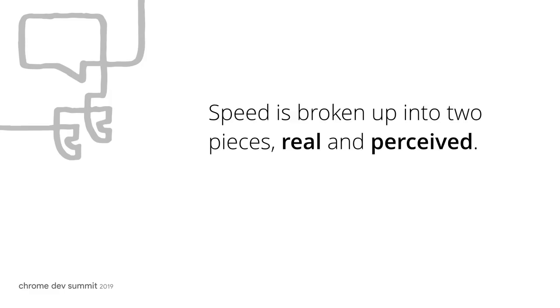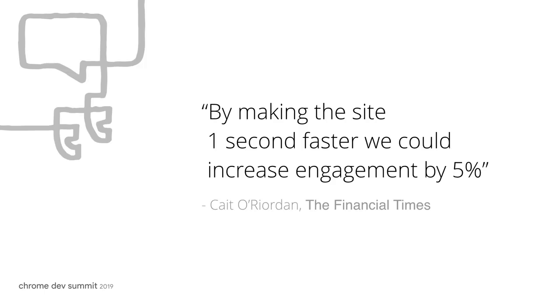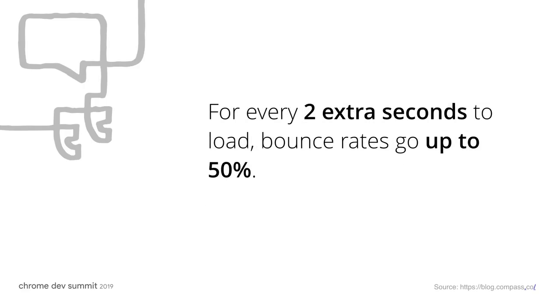Speed is broken down into two things: real and perceived. Looking at some technical speed data, we see the Financial Times, which has an interesting algorithm called the tipping point. If a user comes to the website five times a month to read five articles, they're more likely to subscribe. By making the website one second faster, they increased engagement for everybody. Conversely, for every two seconds a site takes to load, bounce rates go up by 50%. So it's really critical to make your sites technically fast.